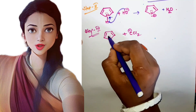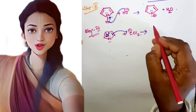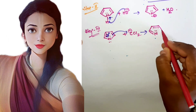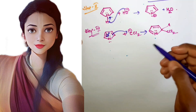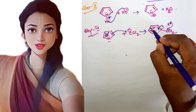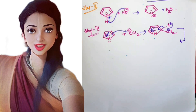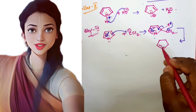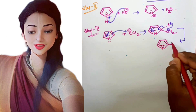The CCl₂ (dichlorocarbene) is now going to react. The lone pair on the nitrogen atom takes part in resonance — the arrows move such that the electron-rich carbon of dichlorocarbene comes and attaches itself to the electron-deficient carbon center of the pyrrole ring.